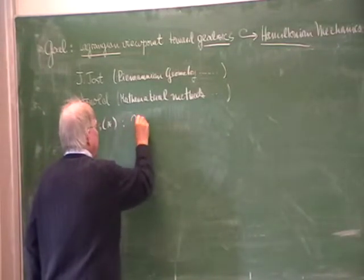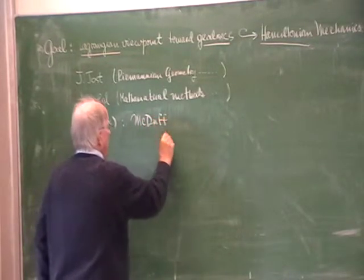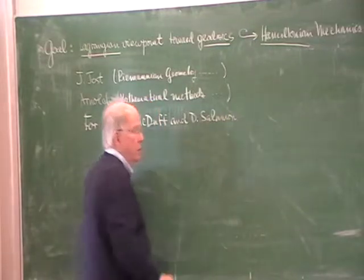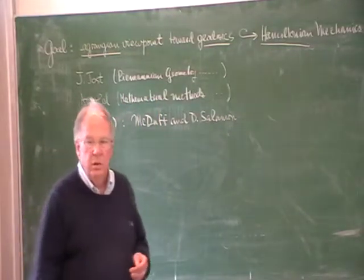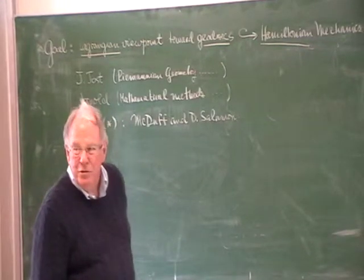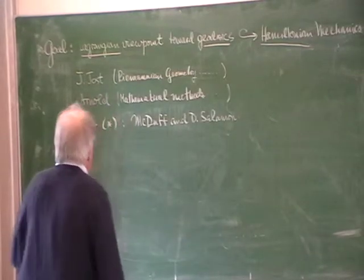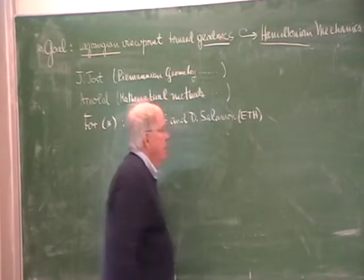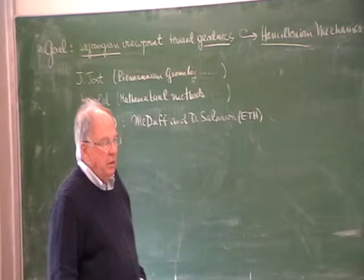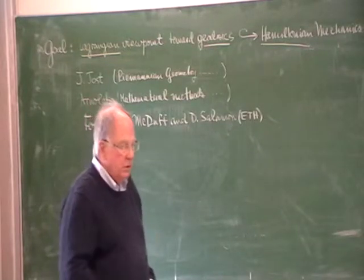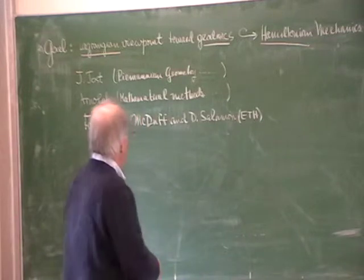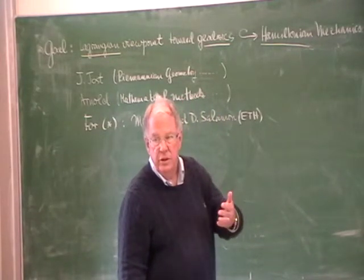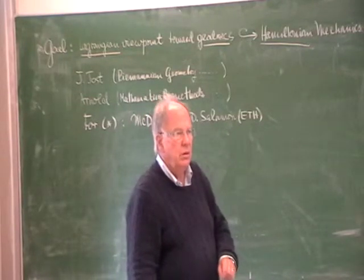One possibility is the book by Dusa McDuff and Dietmar Salomon. They wrote an elementary book on symplectic geometry, published maybe 20 years ago. In fact, Salomon is a friend of mine at ETH Zürich, and one of our students recently went there for their master's degree. Unfortunately, Arnold died — he had many projects. He was a little older than my generation and died too young, maybe at 70. He rode his bicycle all the time and one time simply crashed, and that was the beginning of the end.